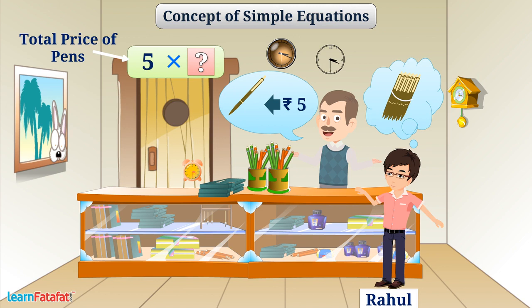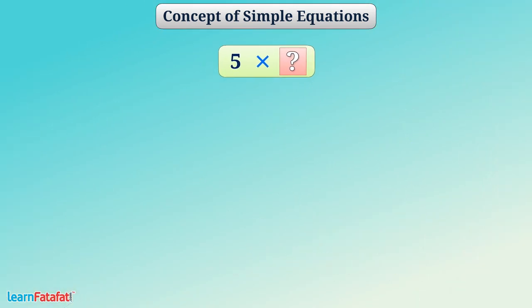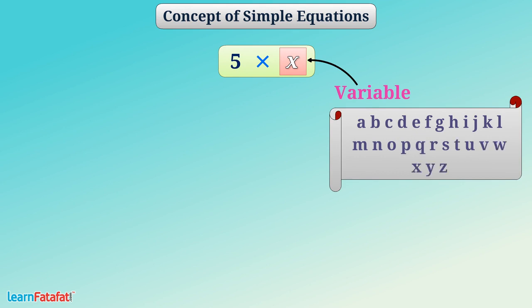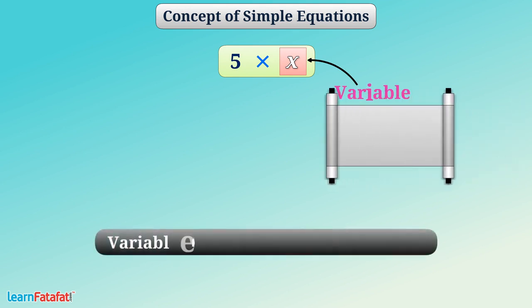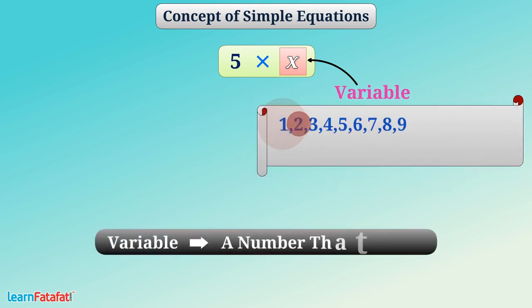Often, it becomes difficult to do mathematical calculations when it involves blanks as shown. A better way is to write a letter such as x at the place of unknown number. We call it a variable. We can use any letter as a variable.